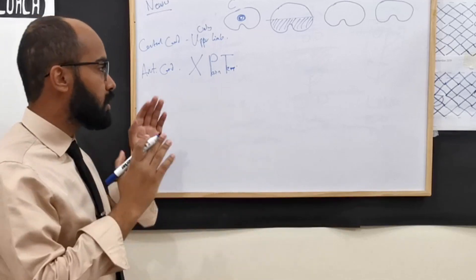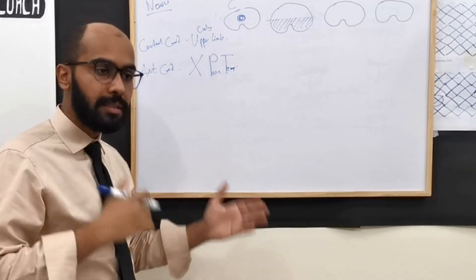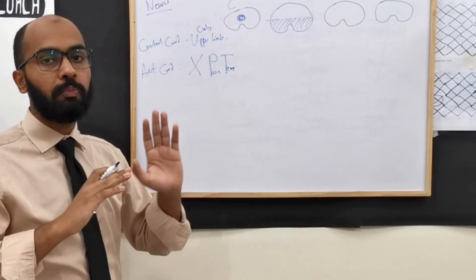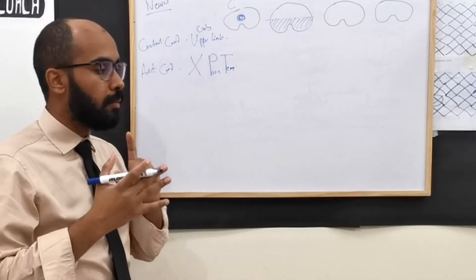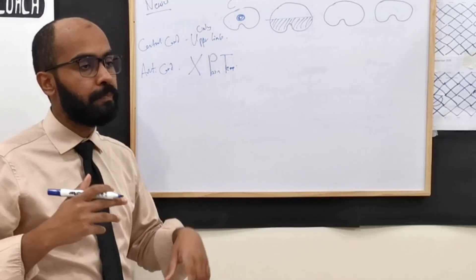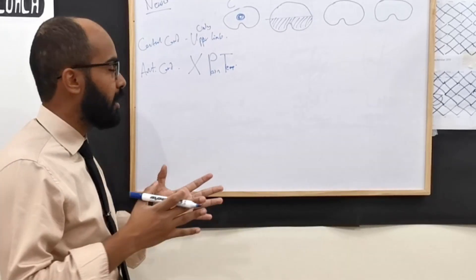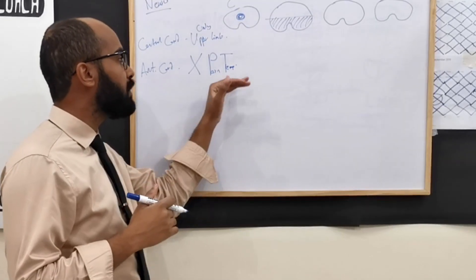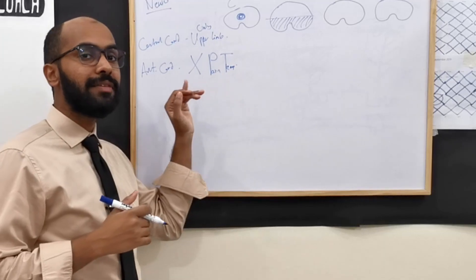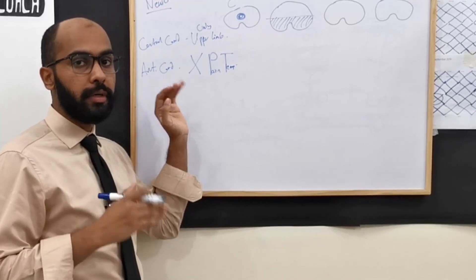No pain and no temperature sensations. So there is sensory loss of pain and temperature. Everything else is normal. Position, vibration, basically everything else is normal. No PT leads you to believe that this is anterior cord syndrome.